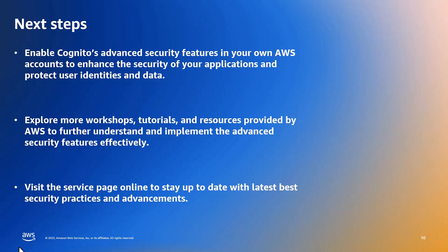In this video, I have showcased the powerful advanced security features of Amazon Cognito and how they can bolster the security and protection of your applications. Throughout the demonstration, I highlighted the steps to enable ASF in Amazon Cognito, including configuring compromised credentials and adaptive authentication. By leveraging these features, you can proactively detect and respond to potential security threats, ensuring the safety of your users and their data. I encourage you to enable Cognito's ASF in your own AWS accounts, and explore more workshops, tutorials, and resources provided by AWS to further understand and implement ASF effectively. Click on the link to explore Amazon Cognito's advanced security features further.